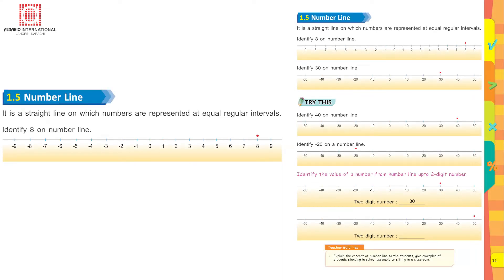A number line is a straight line on which numbers are represented at equal regular intervals. Identify 8 on the number line. Now look for the 0, start moving towards right. Yes, here lies 8.